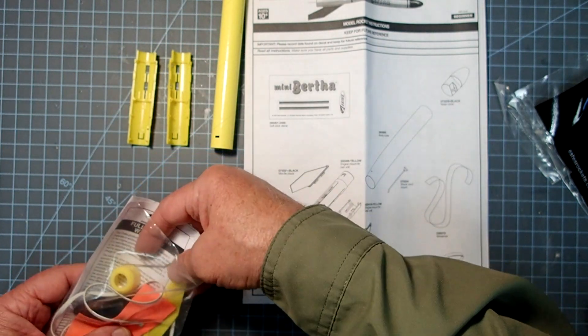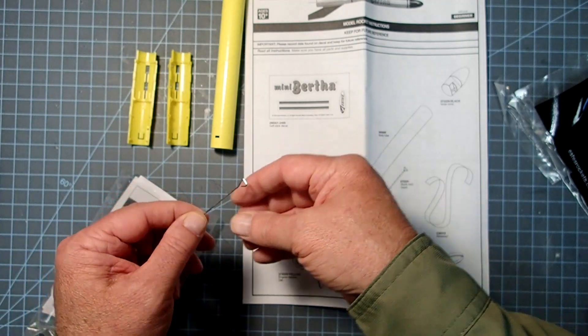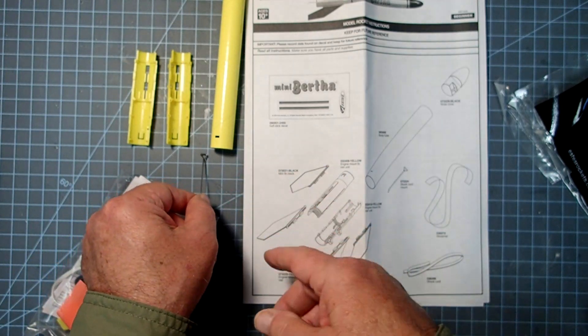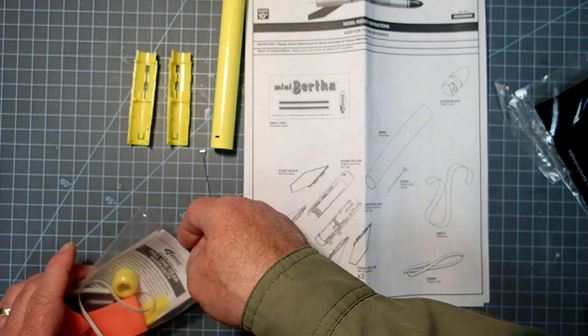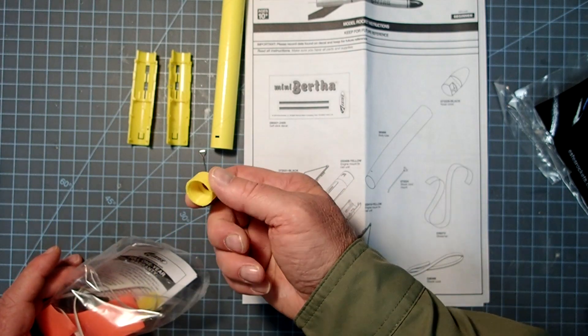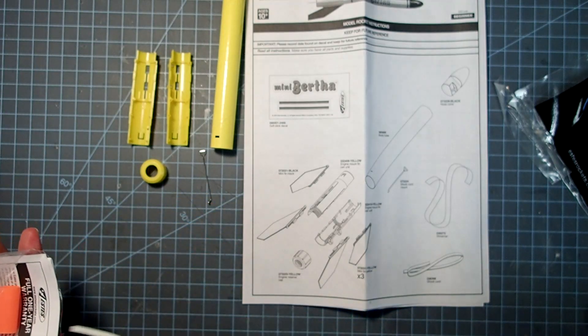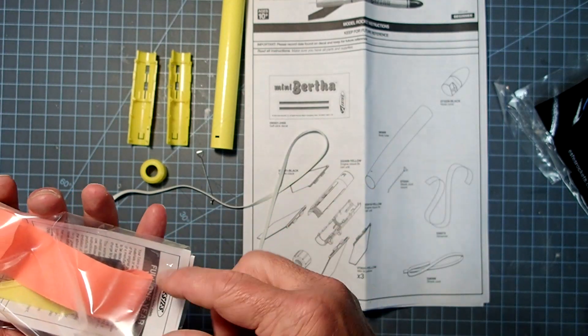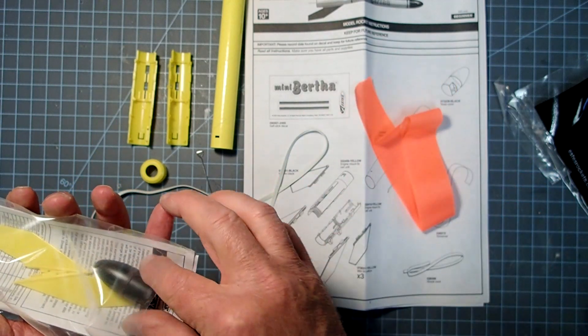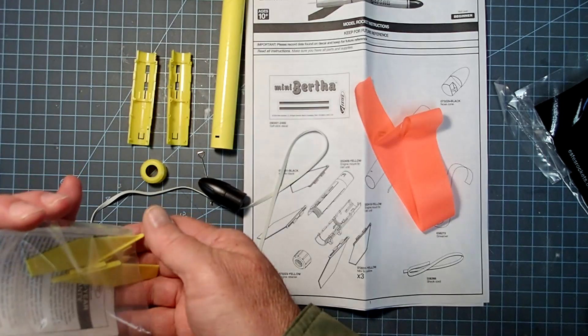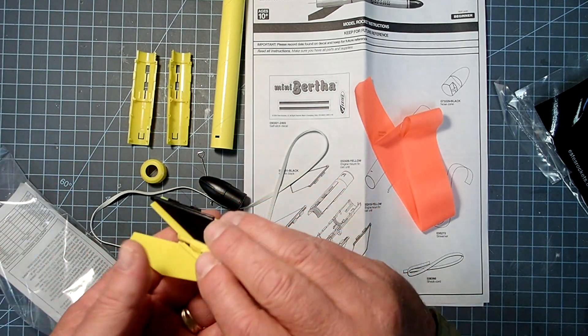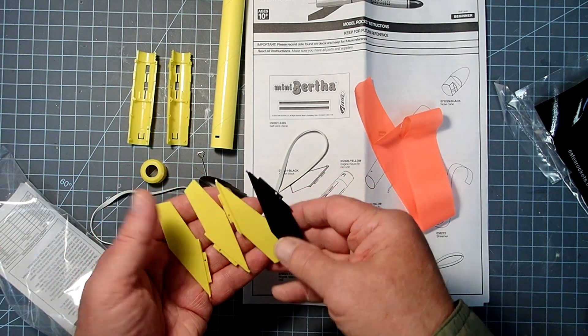This little metal clip is actually the shock cord anchor, also seen in the Starhopper. We've got a motor retainer, elastic shock cord, streamer, black nose cone, and four fins, three yellow and one black.